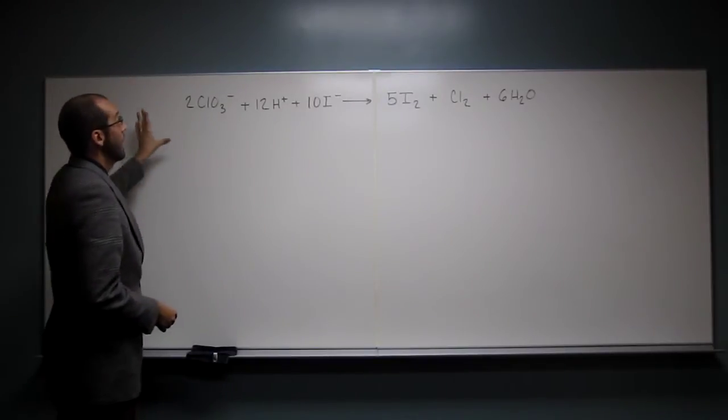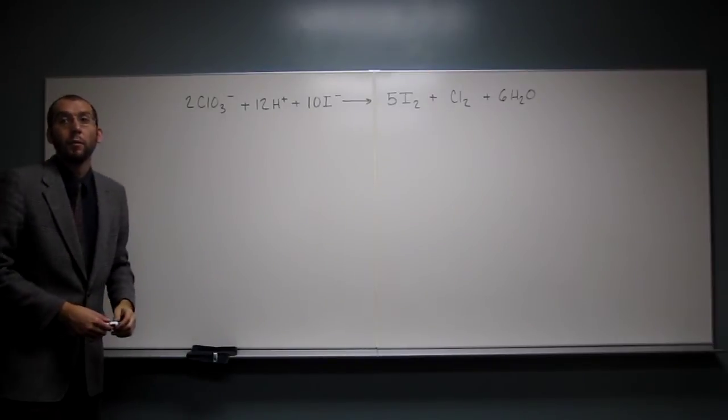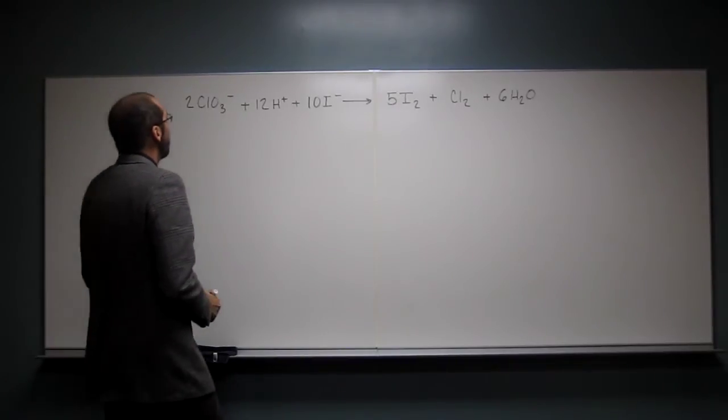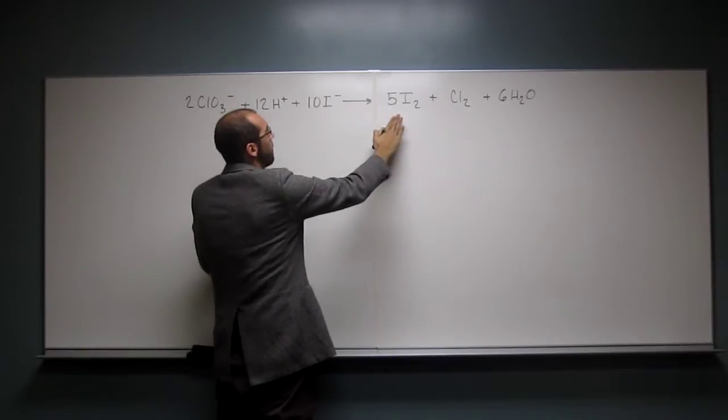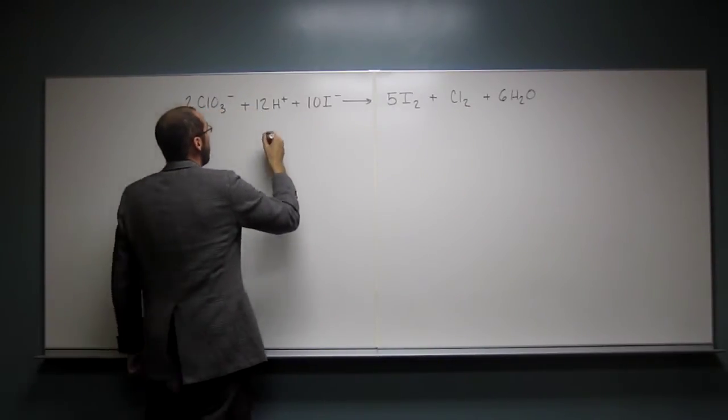So what we're going to do is take this equation and break it back up into its reduction and oxidation equations. So hopefully you can see that one of the equations is here: 10I minus goes to 5I2s, right? So let's write that one down.